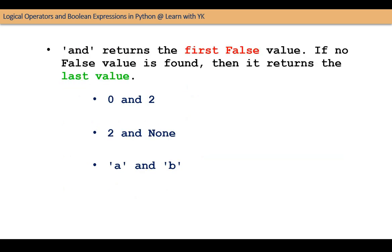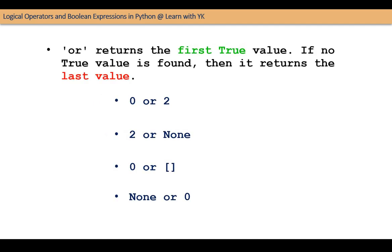AND returns the first FALSE value, and if no FALSE value is found, it returns the last value. For example, 0 AND 2 will return the first FALSE value, that is 0. 2 AND NONE will return the first FALSE value, that is NONE. A AND B will return the last value, that is B, because no FALSE value is found. OR returns the first TRUE value; if no TRUE value is found, it returns the last value. For example, 0 OR 2 returns 2. 2 OR NONE returns 2. 0 OR empty_list returns empty_list. NONE OR 0 returns 0.